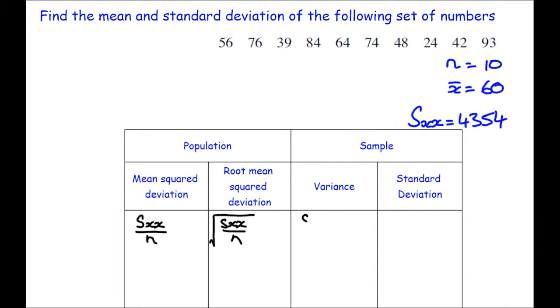Variance is S_xx divided this time not by n, but by n minus 1.